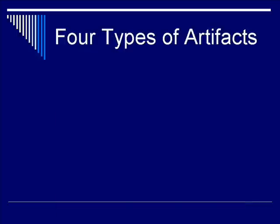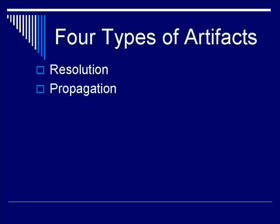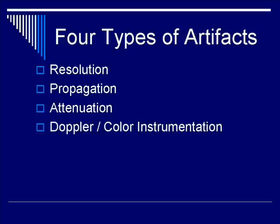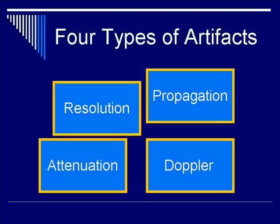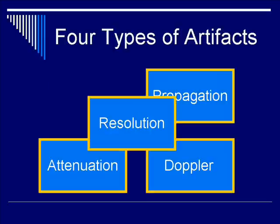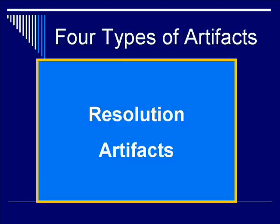Let's talk about the four types of ultrasound artifacts. Number one: resolution-related artifacts, similar to what we talked about in the transducers lecture. Second: propagation-related artifacts, which form the bulk of the artifacts in this lecture. Third: attenuation-related artifacts, more commonly appreciated in clinical ultrasound scanning. And fourth: Doppler and color instrumentation-related artifacts. So the four types are resolution, propagation, attenuation, and Doppler.